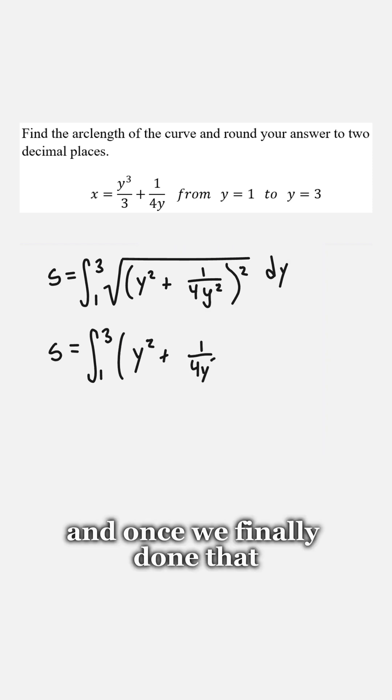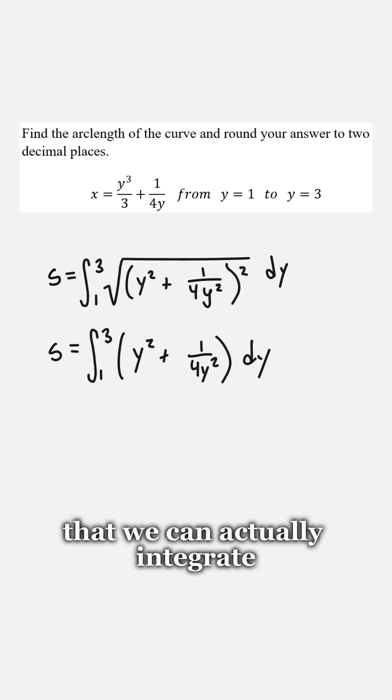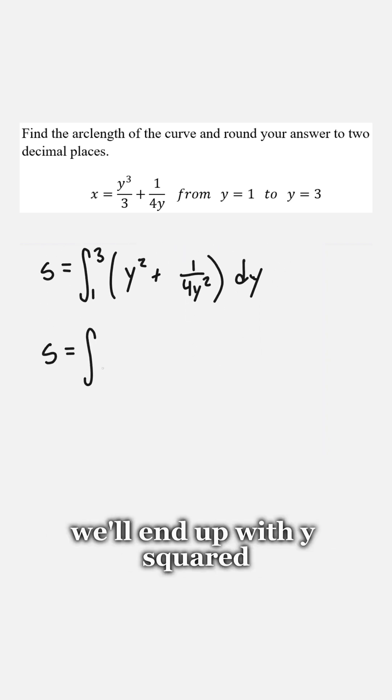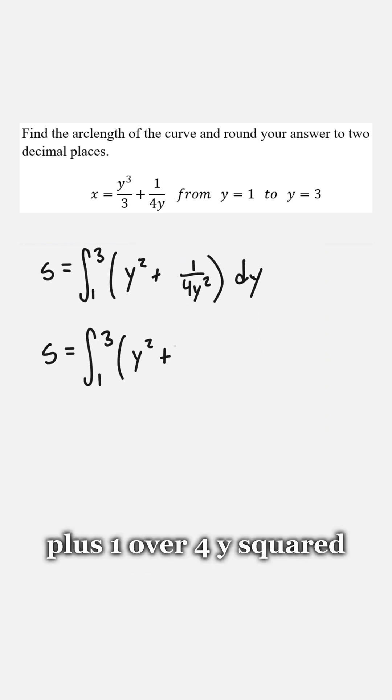And once we've finally done that, now we get something normal that we can actually integrate. So once we've simplified everything, we'll end up with y squared plus 1 over 4 y squared.